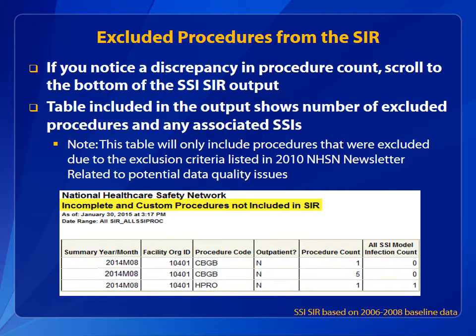When evaluating procedures and related SSIs from SIR calculation, ensure that procedure and infection counts are accurate and procedures are not missing variables or have outlier values. If you notice a discrepancy in the procedure count, refer to the table at the bottom of the SSI-SIR output that shows the number of excluded procedures and any associated SSIs. This table shows procedures excluded from the SIR using the exclusion criteria listed in the 2010 NHSN newsletter. These excluded procedures and associated SSIs can also be related to potential data quality issues.